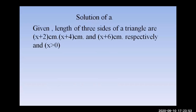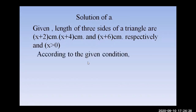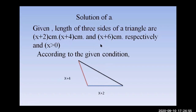Part a — drawing the proportional figure. Given x is greater than zero, take x equals 2. Then the sides are: x plus 2 equals 4 cm, x plus 4 equals 6 cm, and x plus 6 equals 8 cm. Draw this triangle using a compass with these measurements.